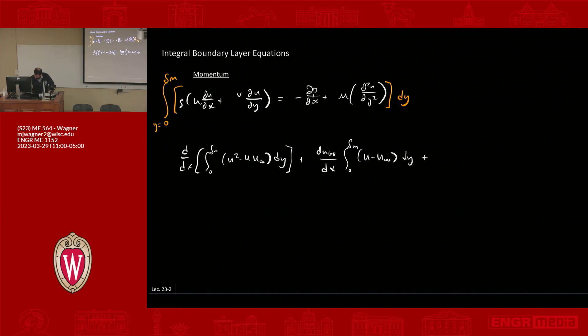The third term is velocity at y equals 0, the y component of velocity, v at y equals 0 times u infinity minus u at y equals 0. And then that's all equal to 1 over rho times the shear stress at y equals delta m minus the shear stress at the surface, y equals 0.